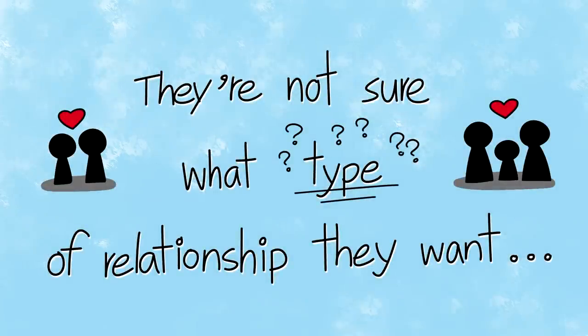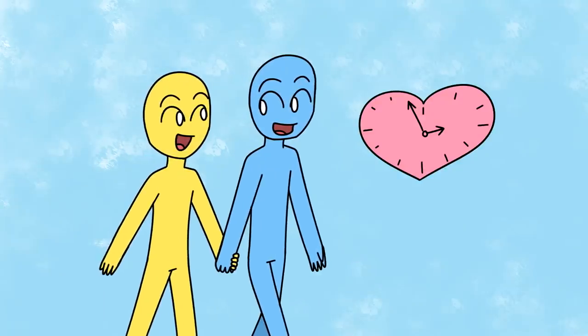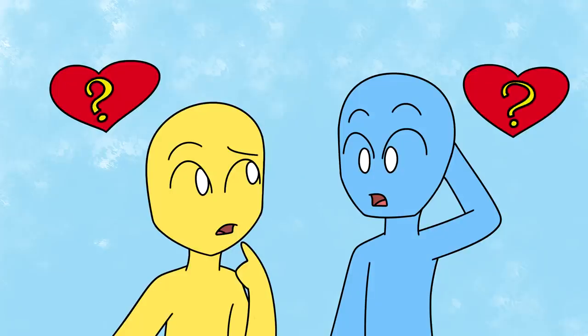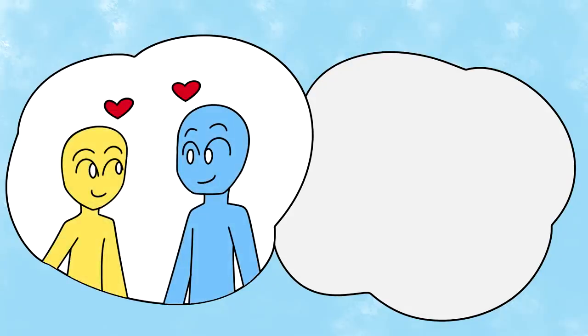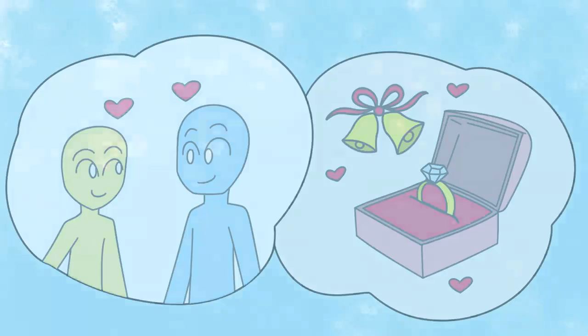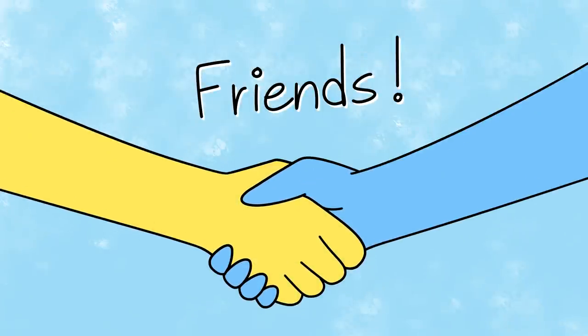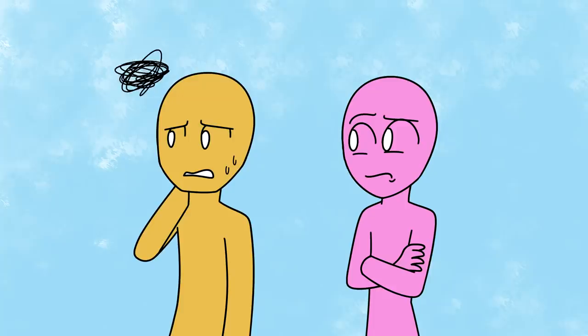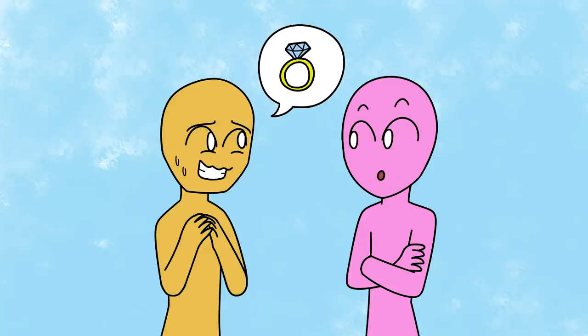They're not sure what type of relationship they want. At a certain point in a relationship, it's usually a good idea to figure out what each partner's goals are. Do you both want something casual or something serious? Maybe you two just want to be friends. But when you find someone who can never seem to decide what they want, it might be a sign they're leading you on.